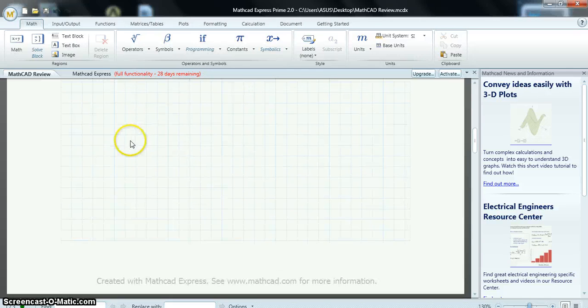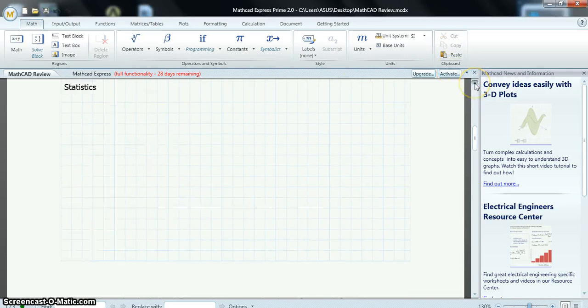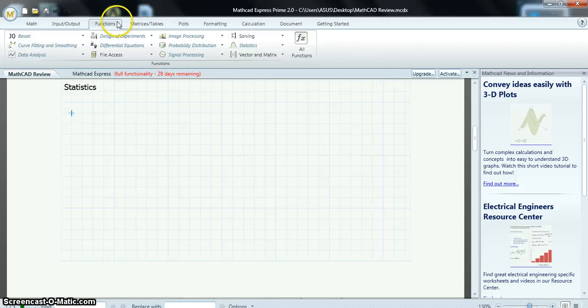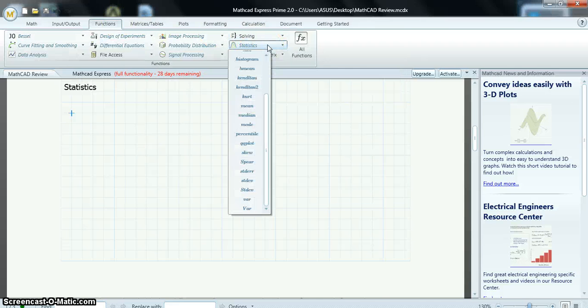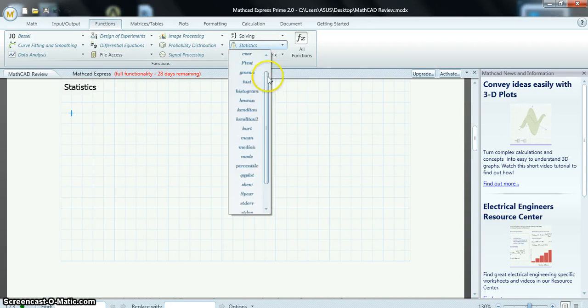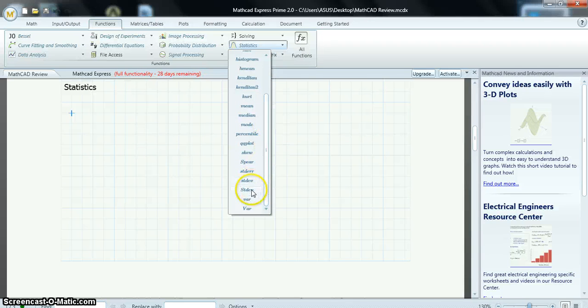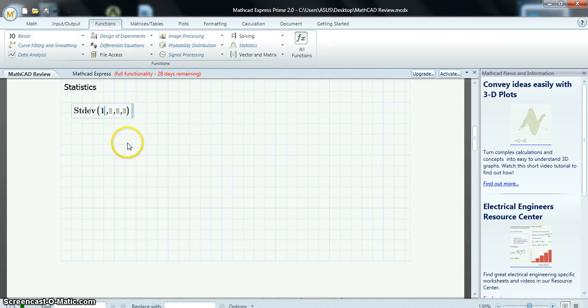Okay, moving on to Statistics. You can find your statistics functions under Functions, Statistics. And, you see a long list here. Let me do Standard Deviation. I'll just enter some values, data values, and press equals, and there's your Standard Deviation.